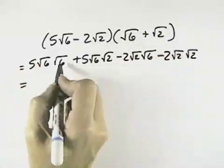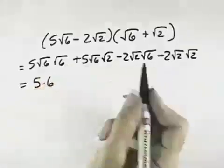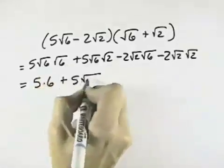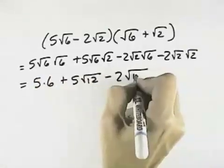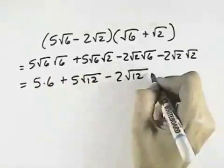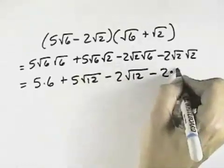So square root of 6 times square root of 6, square root of anything times itself is that number, so this will be 5 times 6. Plus 5 times the square root of 12 when I multiply 6 times 2 together, minus 2 times the square root of 12 when I combine the 2 times 6, and then minus 2 times the square root of 2 times itself will just be 2.